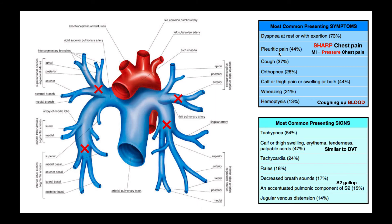The second thing patients may experience is pleuritic pain — chest pain in the lung areas. It can be difficult to distinguish from a myocardial infarction due to differences in patient presentation and location. A big distinguishing factor is that an MI produces more of a pressure chest pain — a deep, weighting pressure on the chest — whereas a pulmonary embolism produces more of a sharp chest pain. A sharp chest pain actually rules down an MI pretty strongly.